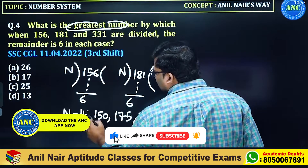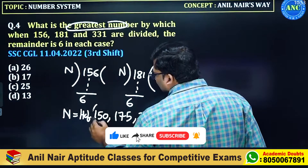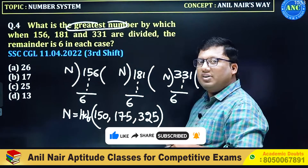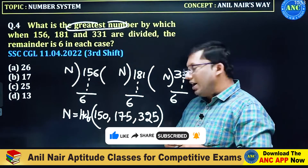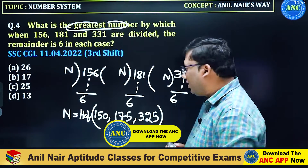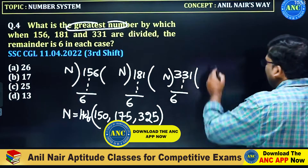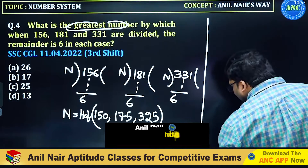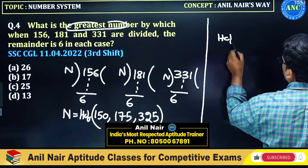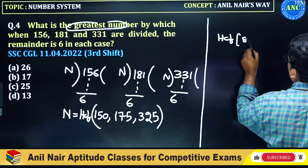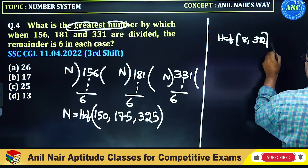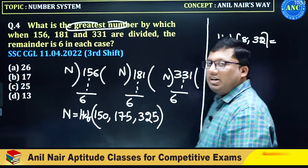Greatest means highest factor, and the highest is given by HCF of 150, 175, and 325. Whenever you are determining HCF — for example, HCF of 8 and 32 — your attention is on the smallest number. For LCM, the attention will be on the largest number.